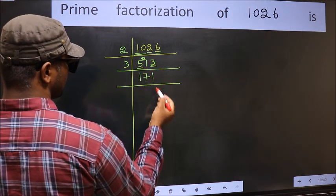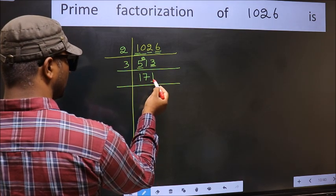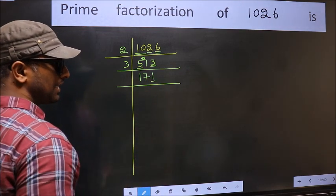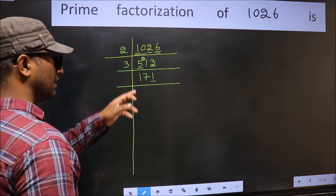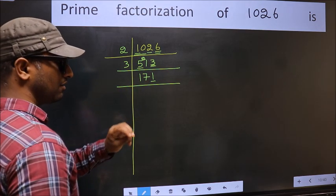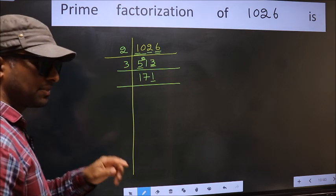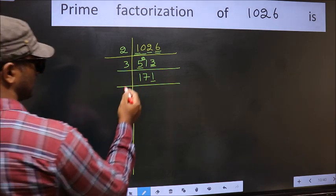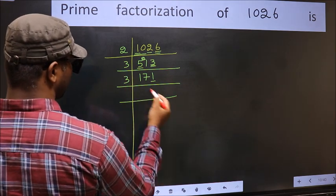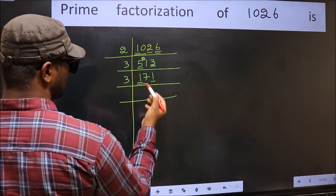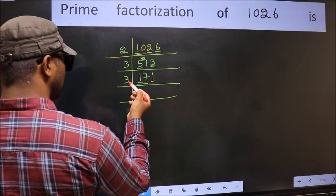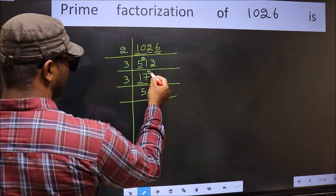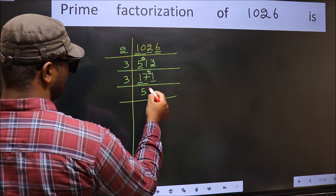The other number is 3. When do we get 3 in the 3 table? 3 times 1 is 3. Now the last digit is 1, which is not even, so not divisible by 2. To check divisibility by 3, we add the digits: 1 plus 7 plus 1, we get 9. Is 9 divisible by 3? Yes. So this number is also divisible by 3. So take 3 here. First number 1 is smaller than 3, so take 2 numbers: 17. A number close to 17 in the 3 table is 3 times 5 is 15. 17 minus 15 is 2, carried forward: 21. When do we get 21 in the 3 table? 3 times 7 is 21.